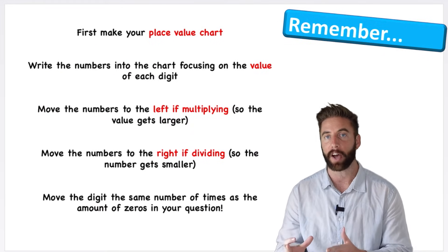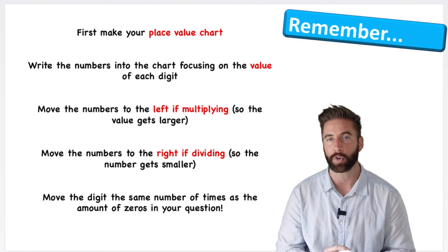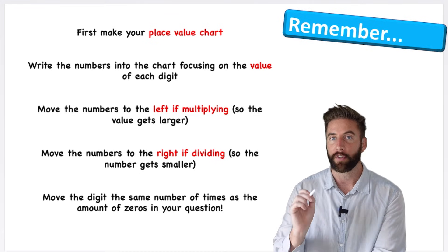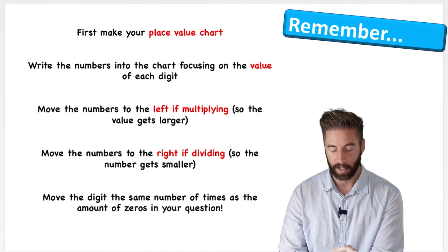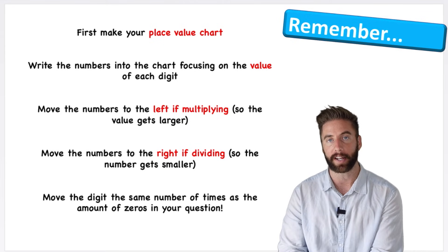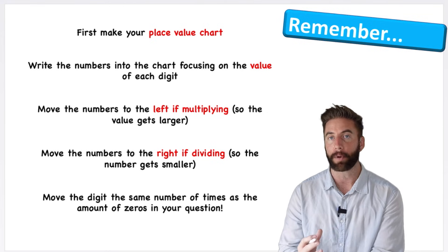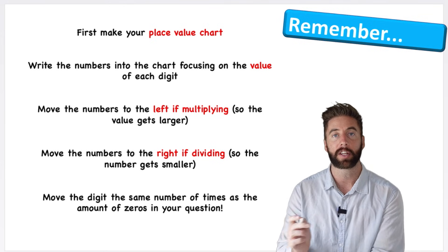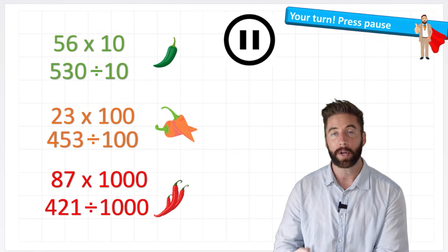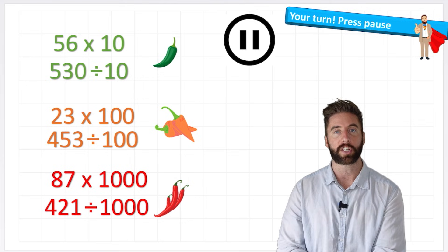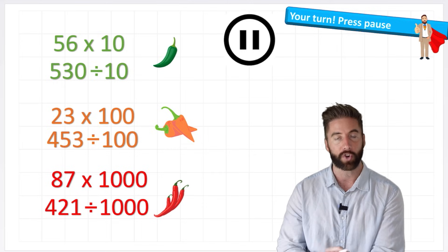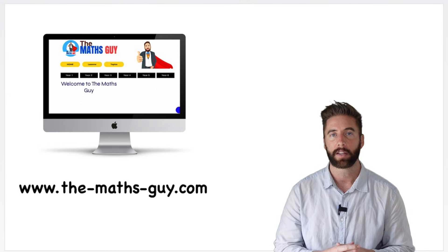Okay, there you go — that is everything you need to know about multiplying and dividing by 10, 100 and 1,000. But let's just look at what to remember: first, always make a place value chart; then write the numbers in the chart, focusing on the value of each digit; then move the numbers to the left if we're multiplying, or to the right if we're dividing; then look at what we're multiplying or dividing by — 10, 100 or 1,000 — see how many zeros are in that number, and move the numbers that amount of times. Now it's your turn: press pause on the video and have a go at answering these questions yourself. If you need a little help, you can go back and see how I did it in the video, but try and do it on your own and put the answers in the comment section.